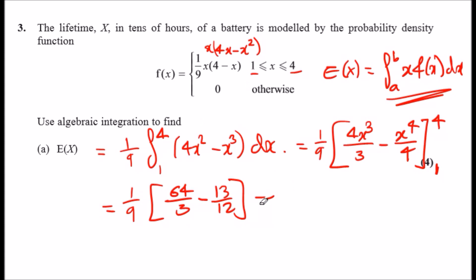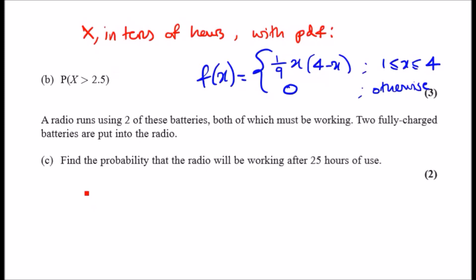Okay, parts b and c. We're given the random variable X in tens of hours with the probability density function. Let's evaluate b: find the probability that X is greater than 2.5. We use algebraic integration because we're working with continuous values. We need to find when x is bigger than 2.5, so we start from 2.5 and go up to the limit 4. That's exactly what we're integrating.